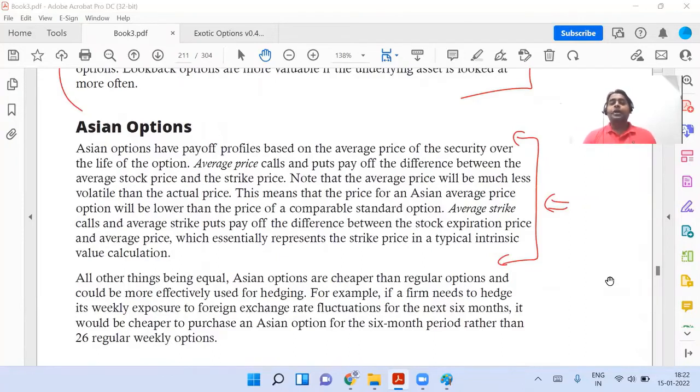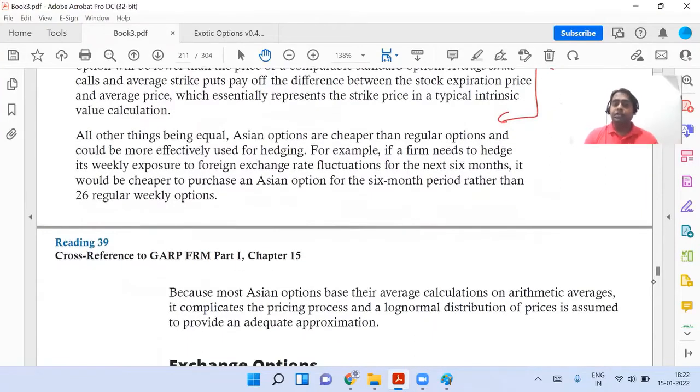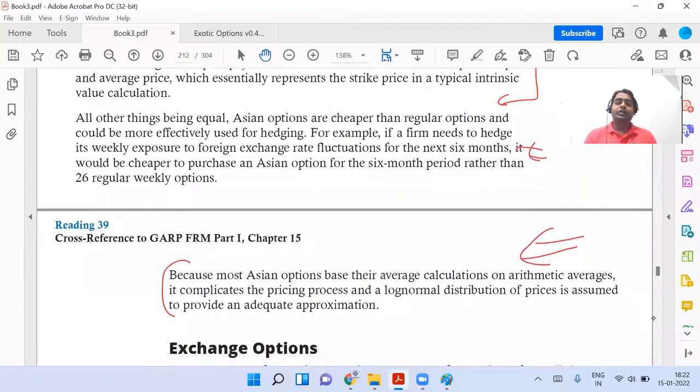Right, but the point that the major discussion could be, when we talk about Asian option, the averaging can be done in very different ways. It can be arithmetic average. It can be geometric average. So different ways to calculate average, right? So if you read, I'm going to come back to this paragraph, but look at this section. What they're saying is that most Asian options, they take average calculation, which is arithmetic average, the normal average. But in some cases, it can be geometric average.